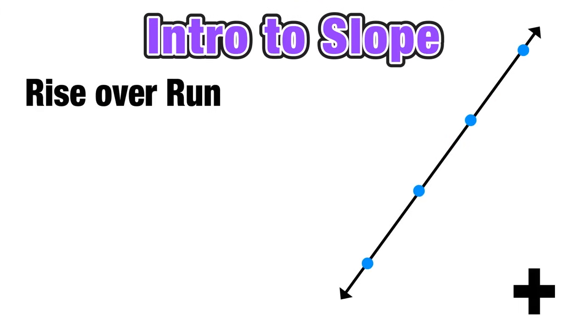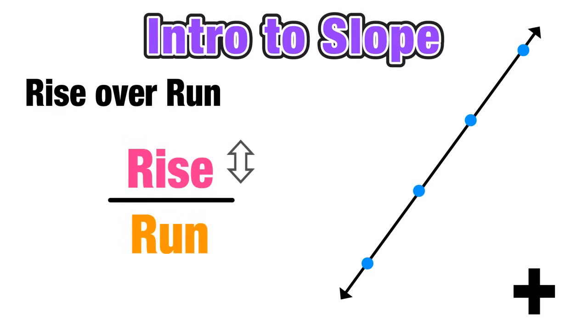We will also be referring to slope in terms of what we call rise over run. So we have a line with points on the line. Now the rise is going to represent how many units up or down we have to move, and the run is going to be how many units left or right we have to move in order to move from point to point, and it kind of makes this staircase image. Now notice that since this line has a positive slope, our rise was upwards and our run was to the right to move from point to point.